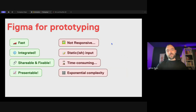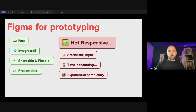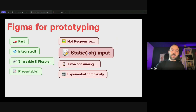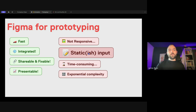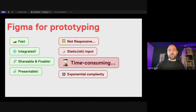Some downsides — and some of these are becoming less of a downside as Figma develops. Prototypes are not inherently responsive. When you design a prototype, you're really aiming for one screen type. The inputs are somewhat static, though that changed recently when variables were introduced. Now Figma has a little bit of logic, which we'll cover later. If your prototype depends on a lot of dynamic text inputs or data handling, you might want to consider something else.